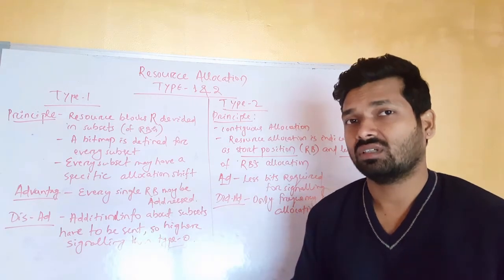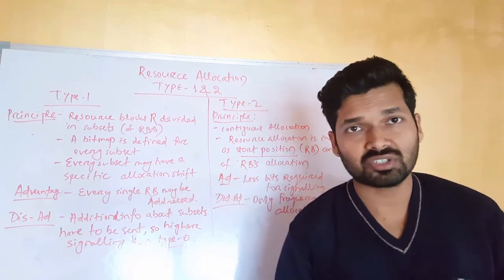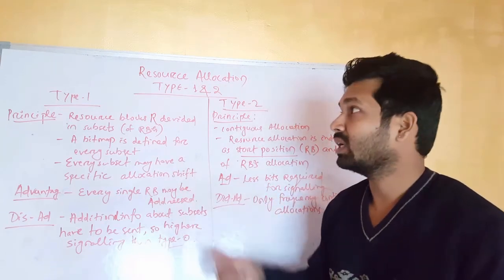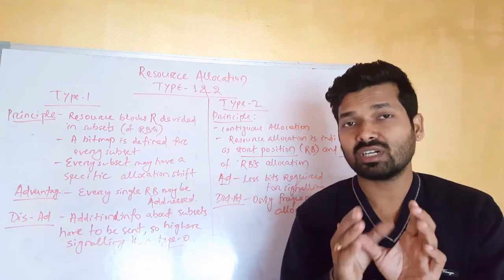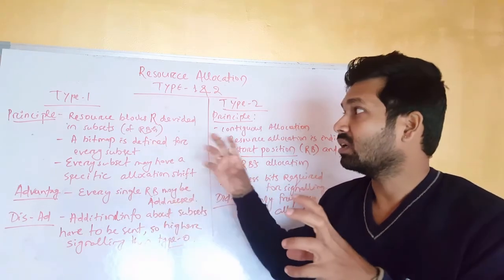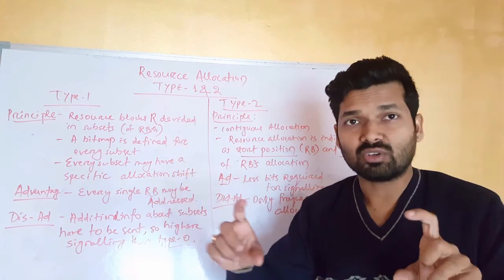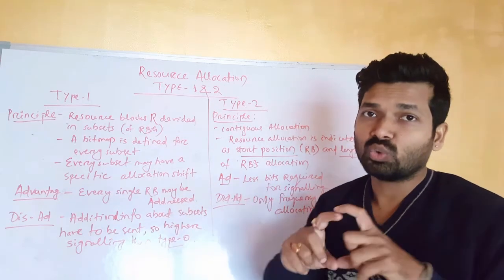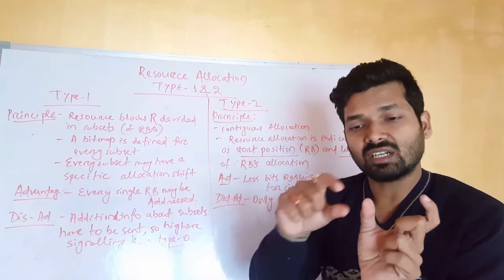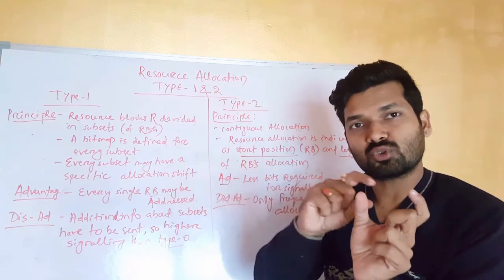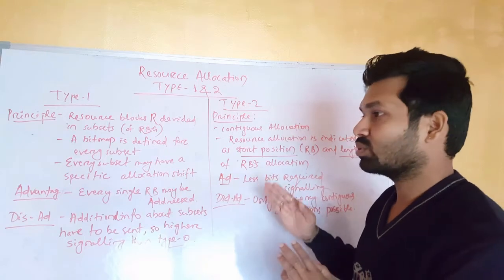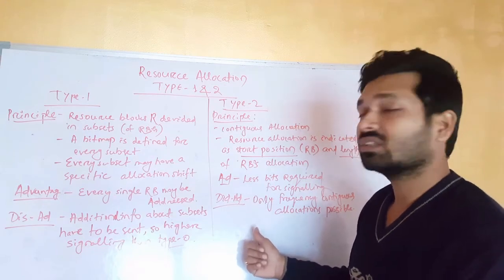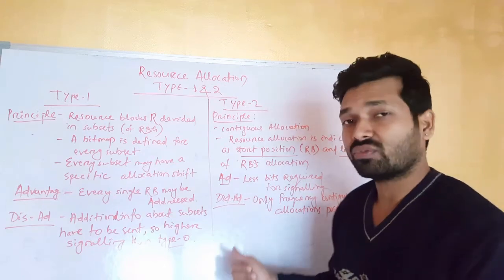To summarize all three types: in type 0, you address resource block groups with one bitmap. In type 1, resource block groups are combined into subsets, and you address every subset through one bitmap along with additional subset information. In type 2, you address allocations using the starting position of the resource block and the number of continuous resource blocks allocated for a user. However, type 2 is only possible for frequency-contiguous allocations.